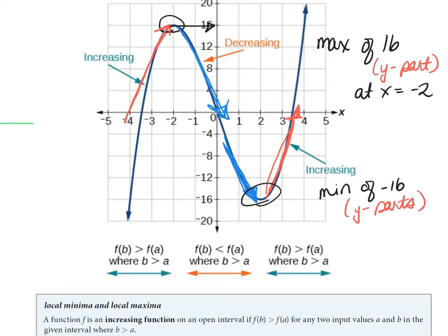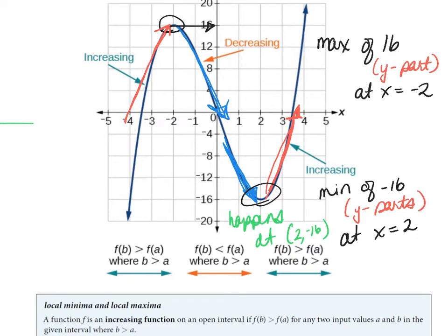Min and max are not ordered pairs. It happens at that point, but we don't write the answer as an ordered pair. We tell you where it happens and what it is. In this case, the minima happens at x equals 2 and it is negative 16. So the minima and maxima are based on the y value — I know it happens at the point (2, -16), but that's not how we write the answer.